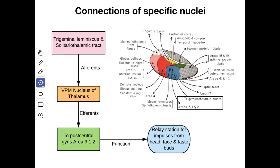Next we'll see the connections of the specific nuclei. From the trigeminal lemniscus and the solitariothalamic tract, these tracts form the afferent and they terminate into the ventral posteromedial nucleus of the thalamus. From here the afferent goes to the post-central gyrus, area number 3, 1, 2. The function of this connection is it is the relay station for the impulses from the head, face, and taste buds.